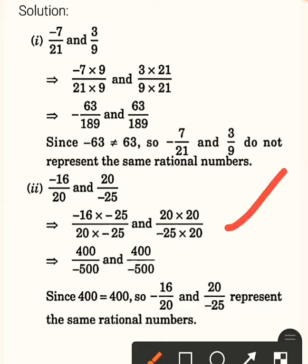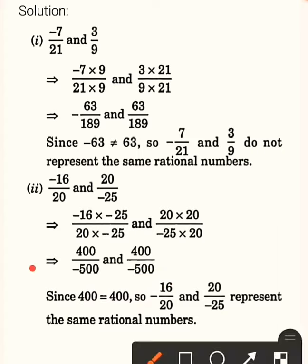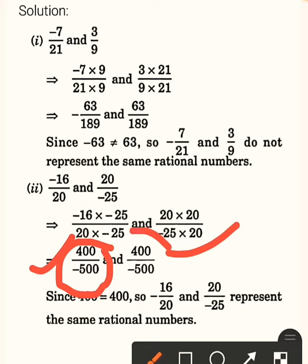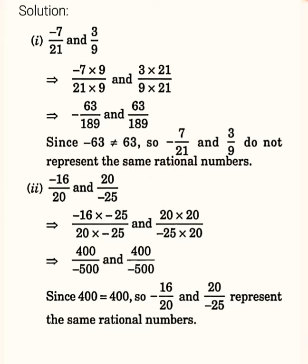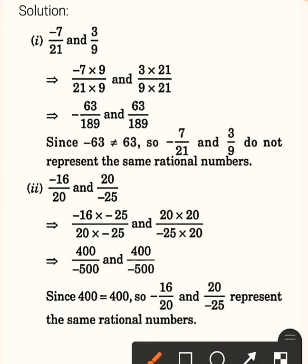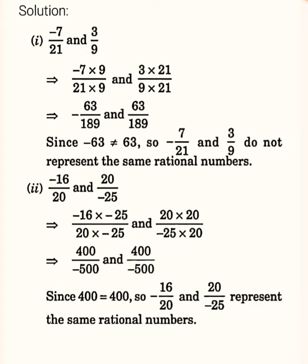Comparing both sides: the first part gives 400 upon minus 500, and the second part also gives 400 upon minus 500. Both are equal. Since 400 equals 400, minus 16 upon 20 and 20 upon minus 25 represent the same rational numbers.